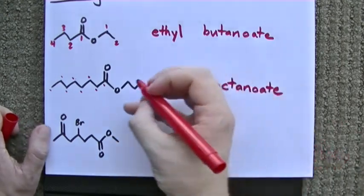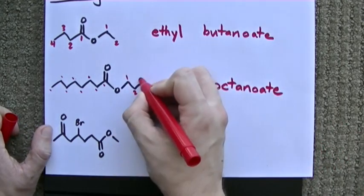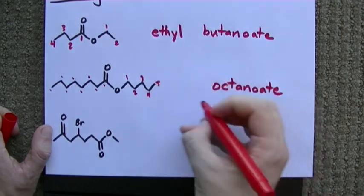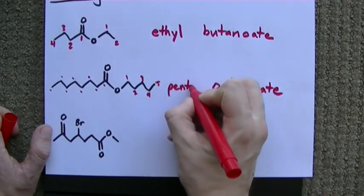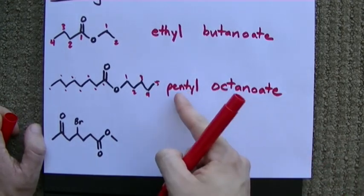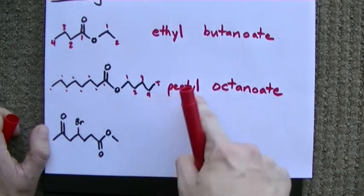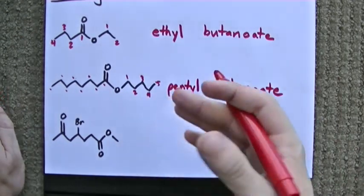And how many carbons are sticking out of the other one? 1, 2, 3, 4, 5. We call this pentyl, because it's a 5 carbon chain sticking off the oxygen. Pentyl octanoate. Pretty sweet.